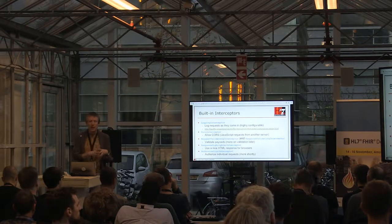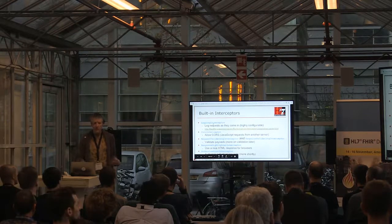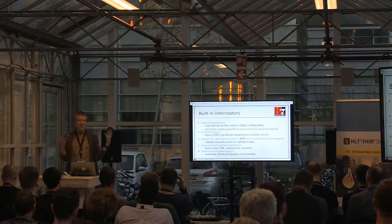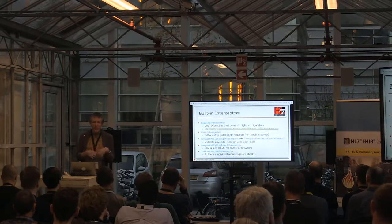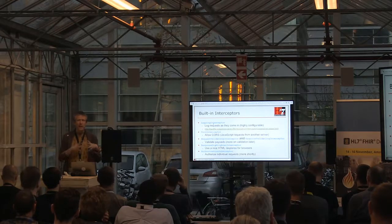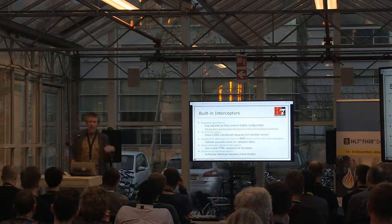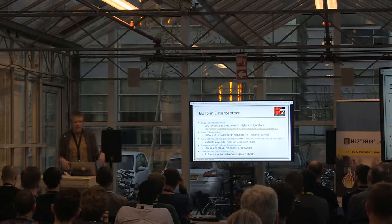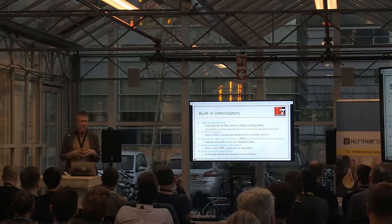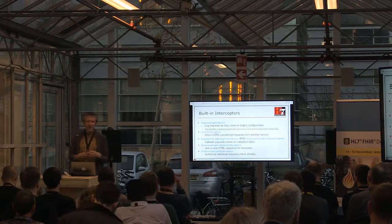HAPI comes with a whole bunch of built-in interceptors. The LoggingInterceptor is probably the most useful. It generates log lines for every request that comes in and has a little templating language that lets you specify exactly the format of the logs. You can log the source IP and URL, headers, request bodies, response bodies, or anything in between. If you want to generate old NCSA format logs used by analytics trackers, you can get those with the LoggingInterceptor.